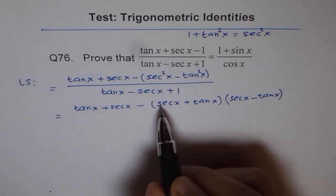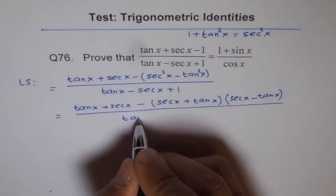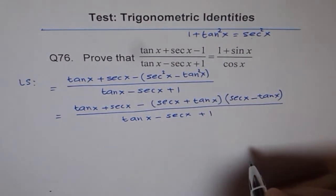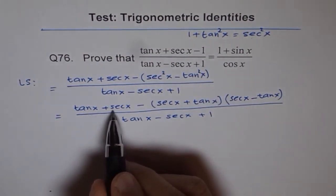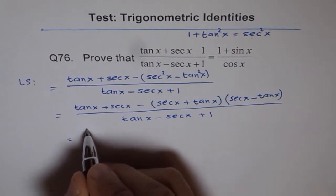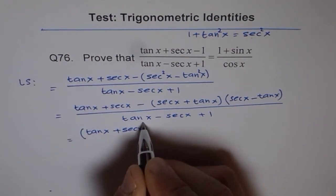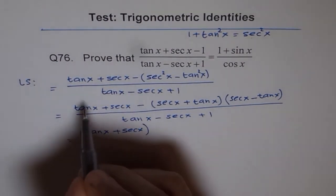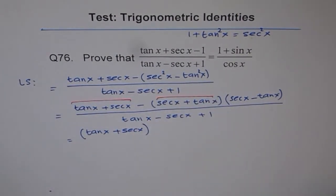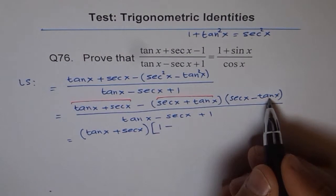From here you can see we've got tan x + sec x kind of common. So I'll factor out tan x + sec x. We're left with 1 from here minus (sec x - tan x). In the denominator we have tan x - sec x + 1.